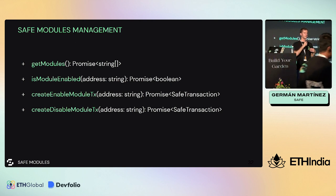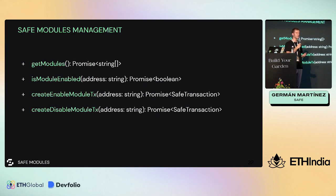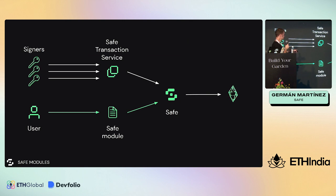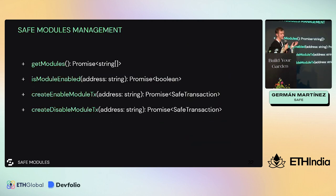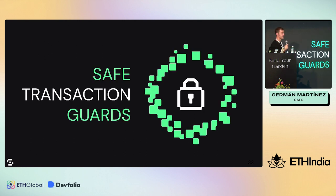How does the Core SDK facilitate the management of Safe modules? There are a few available methods: get modules, which returns a list of enabled modules in your Safe; is module enabled - importantly, for a module to execute transactions it must be enabled in the Safe, meaning signers need to create a transaction to enable it initially; you can also enable a module, disable a module, check if a module is enabled, and get the list. That's the four methods for modules.